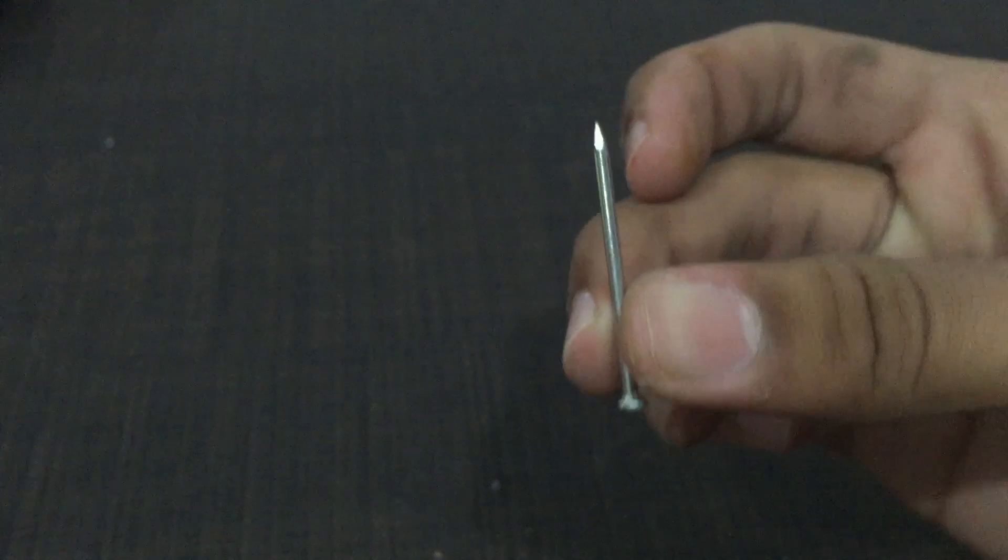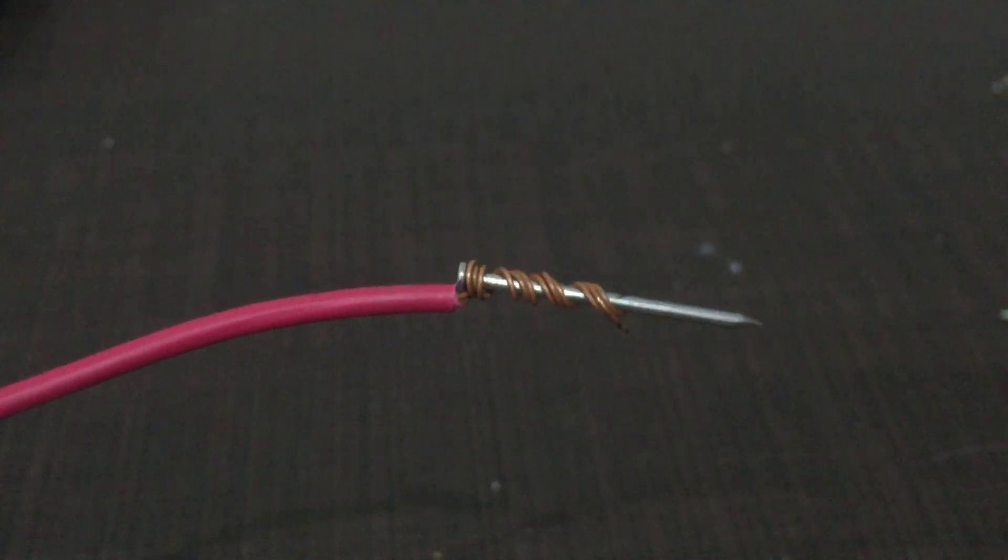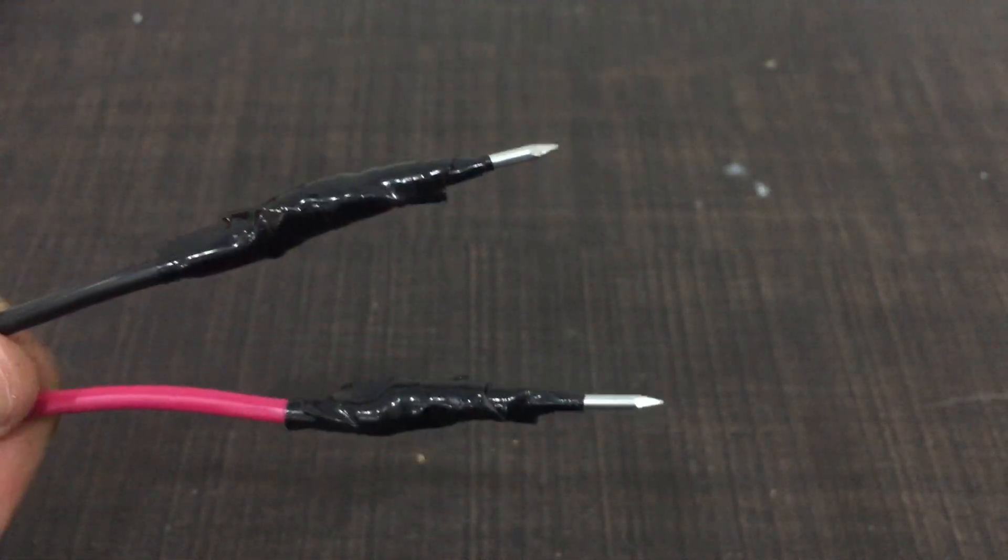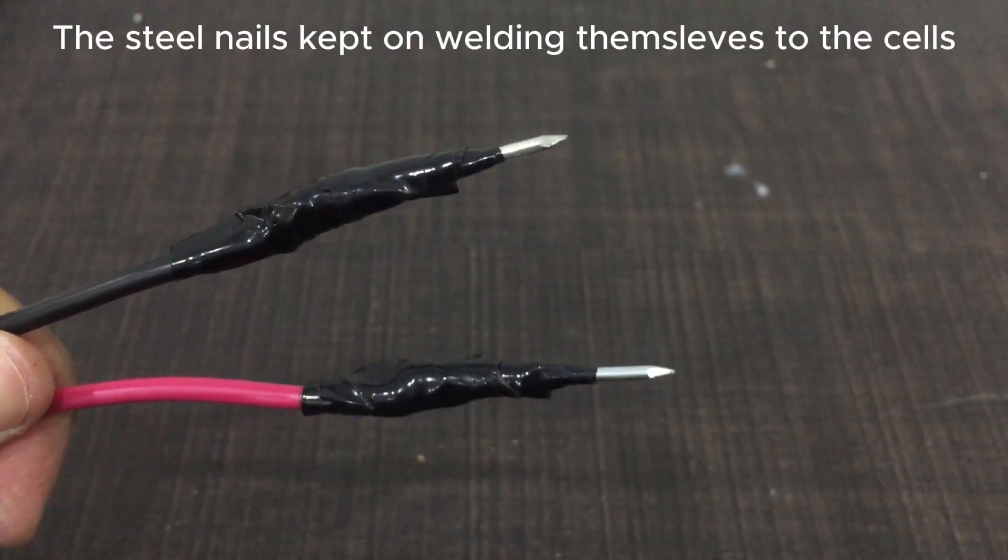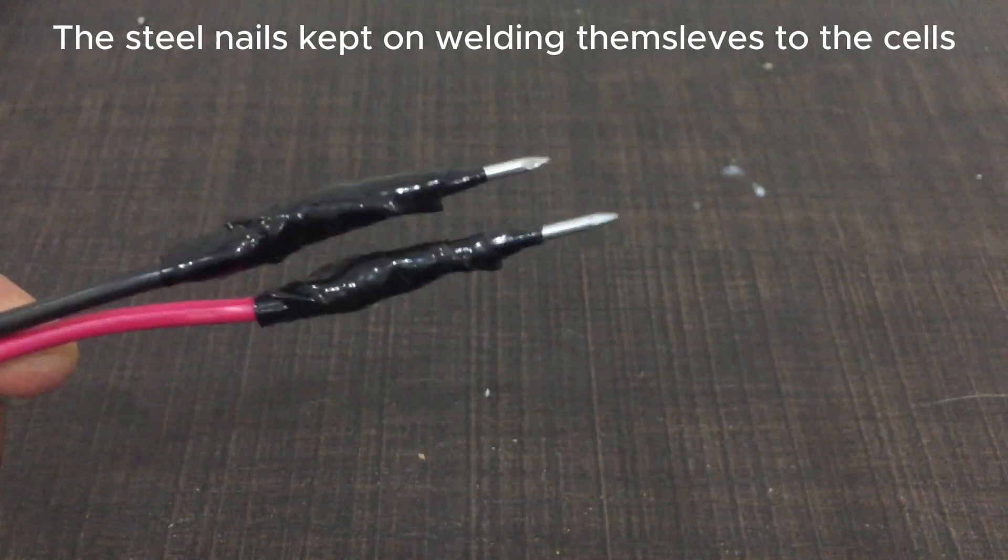Now it's time for the spot welding tips. For that, I will be using these steel nails connected to these wires, followed by some electrical tape. Here's what the finished product looks like. However, I changed this to bare wire only as the nail would weld itself to the cells.